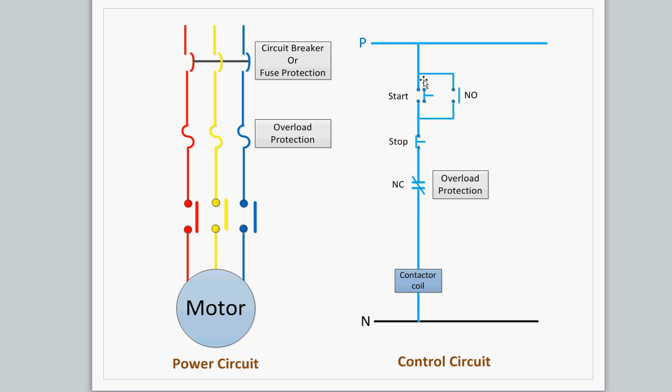In the control circuit, you can see here when the operator presses the start button, the circuit closes and the contactor activates. At that time, it closes all these three contacts. Once the operator removes the start button, the current continuously flows through this normally open contact of the contactor. Once it's activated, this contact gets closed and now the circuit will flow from this side here.